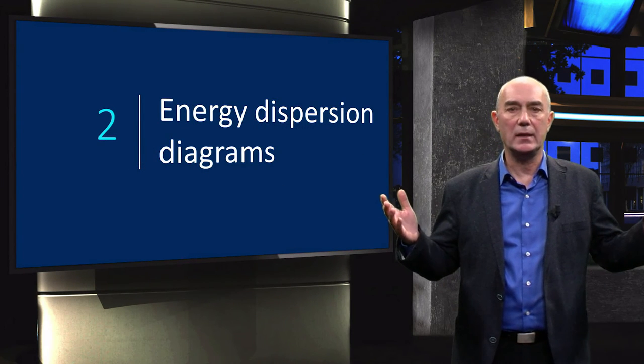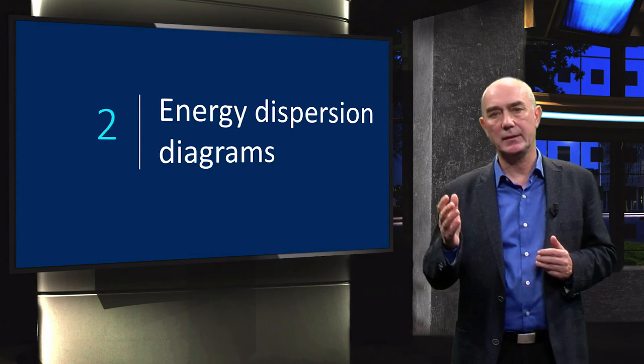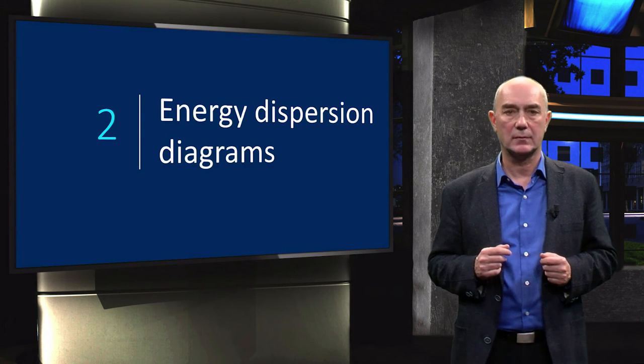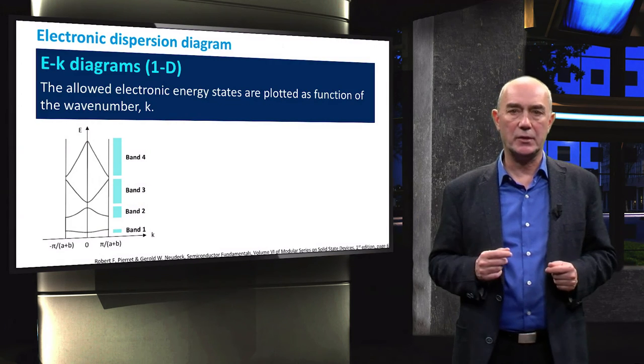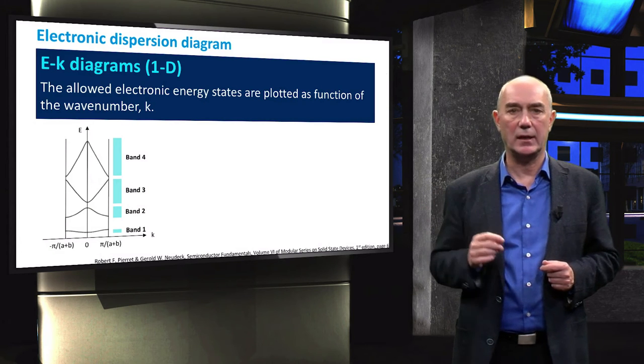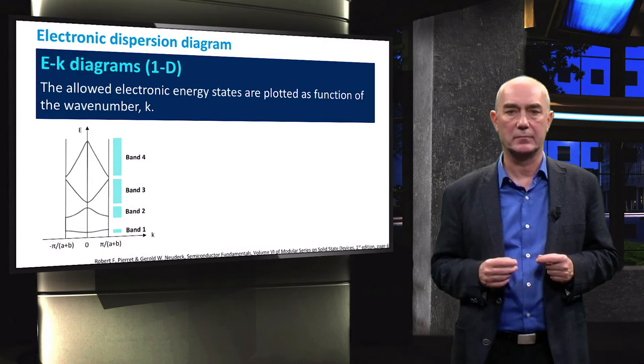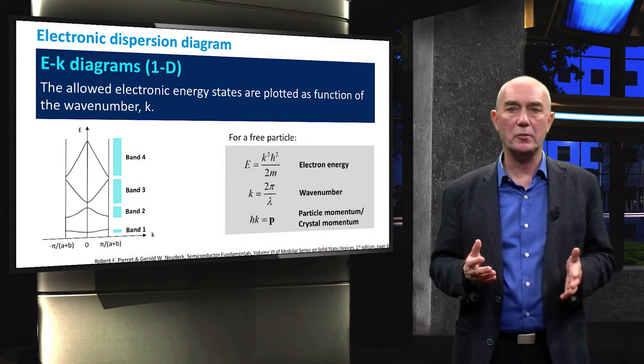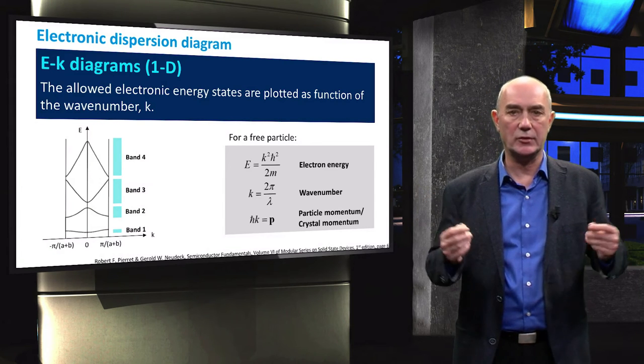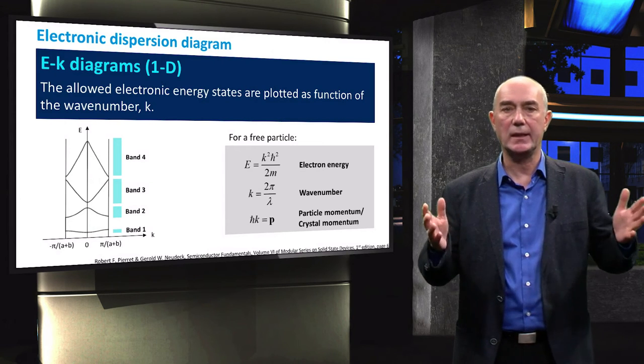But why are we interested in wave numbers and energy bands? To understand it, we will now look at the energy dispersion diagrams. An energy dispersion diagram, also referred to as a k diagram, relates the electron energy states to the wave number k. Doing so, in a one-dimensional system, we are able to know the energy of an electron for any specific value of k. But not only that.